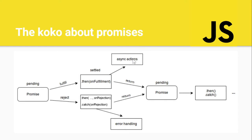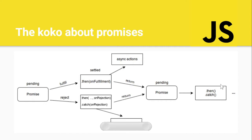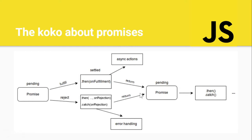Asynchronous means something happens in the background without stopping your code - your code keeps running, and when it finishes it gives you something back. If there was an error, it goes to .catch() for error handling. Either way - whether fulfilled or rejected - it returns a promise. The values you get will be available inside .then() and .catch() callbacks.